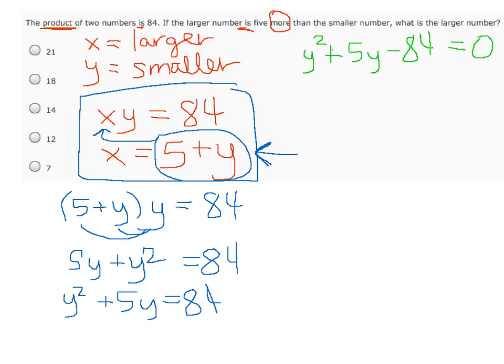Now we're looking for two numbers that multiply to negative 84, but add up to positive 5. The two numbers that will give us that are negative 7 and 12. We can now rewrite this as y minus 7, times y plus 12, equals zero.